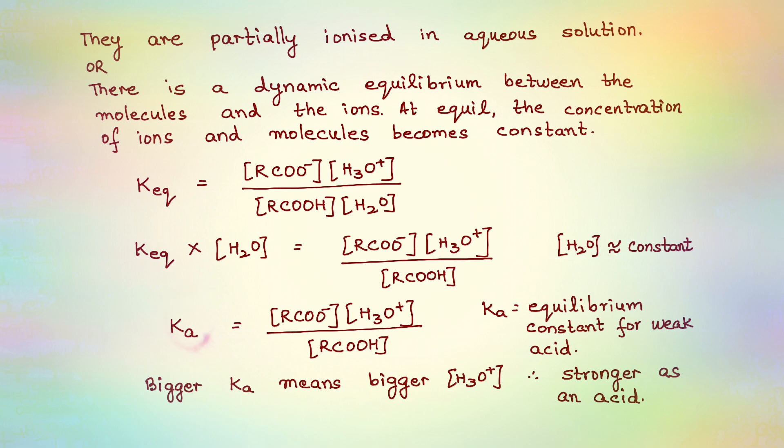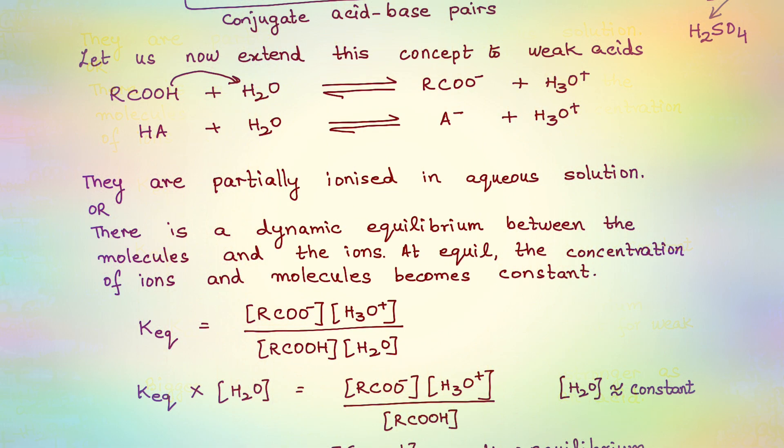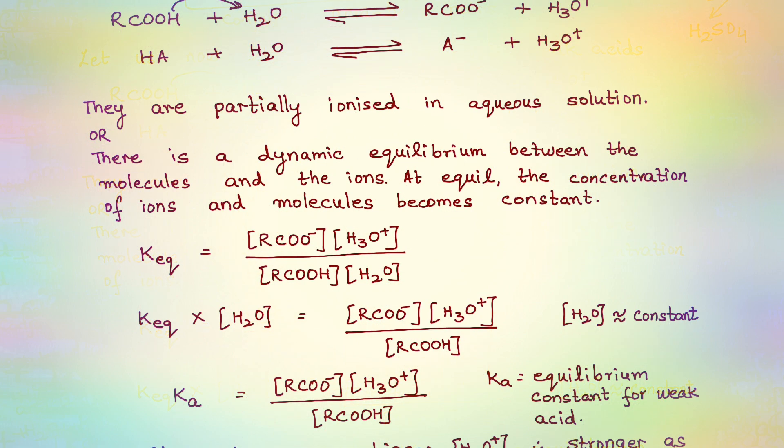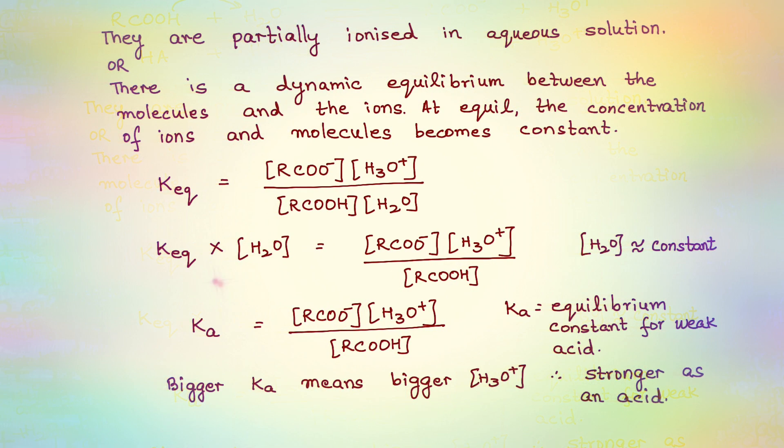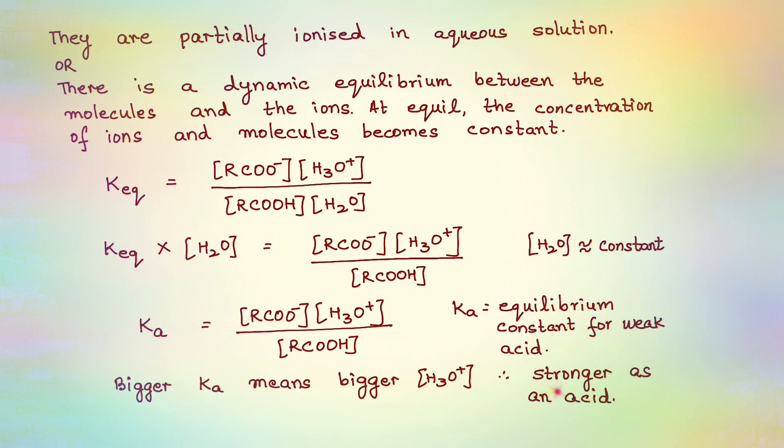Now if you see, Ka helps to determine what kind of acid I have at hand, whether it's a weak acid or a strong acid. Acid means something which is going to form H3O+. If my numerator is bigger, that means my Ka value will be higher. When does my numerator become higher? When my H3O+ concentration is higher. In other words, there is higher formation of H3O+; my acid is undergoing greater ionization. Acid undergoing greater ionization means giving me a greater or a higher value of the equilibrium constant. That means I have a stronger acid at hand.